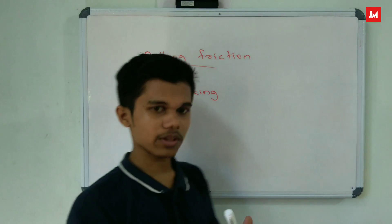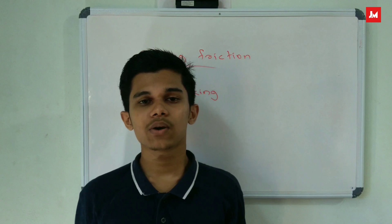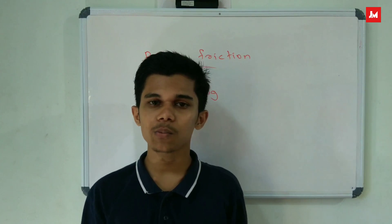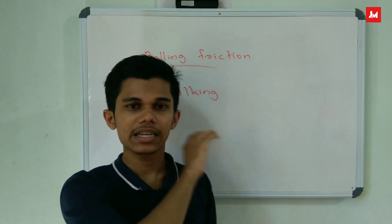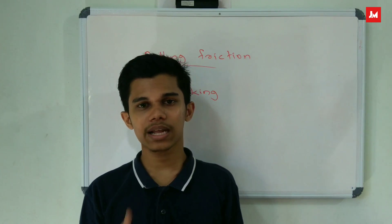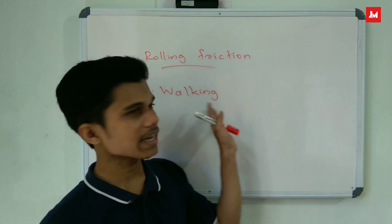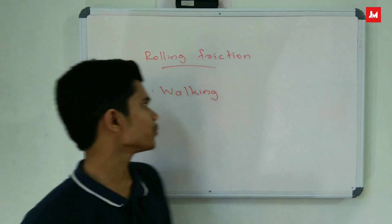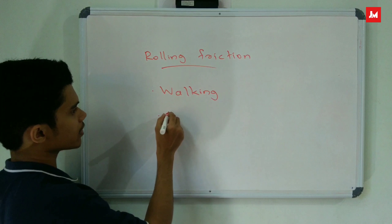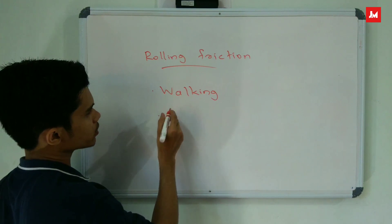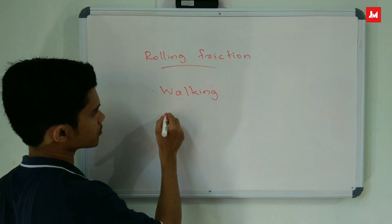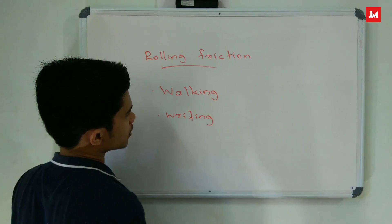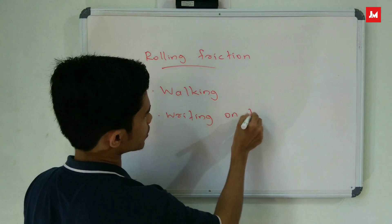A friction example is walking. If we have a floor, friction prevents us from sliding. Another example is writing using chalk on the board.